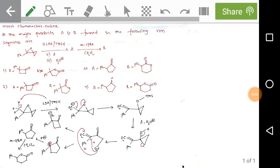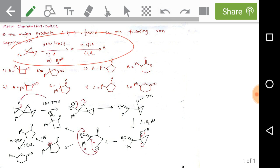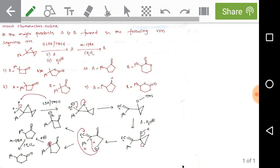We are discussing problems from CSIR June 2008 in chemical sciences. The problem asks for major products A and B in the following reaction sequence. In the first step, LDA (lithium diisopropylamide) is a bulky strong base which abstracts the acidic proton from the less hindered position — specifically from the CH3 group, which is less hindered.